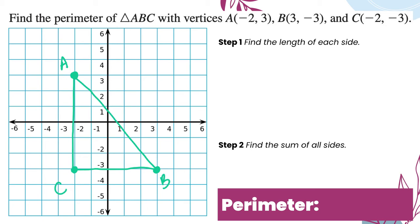Step one is finding the length of each side. I have side AB. To find the length from A to B, I can't just count it because it's going across the diagonals. If my line is not vertical or horizontal, I must use the distance formula.